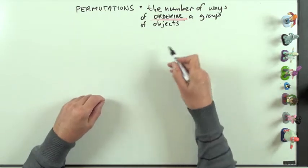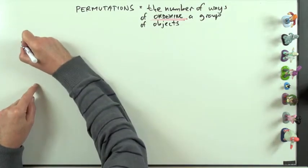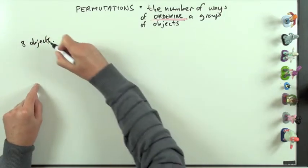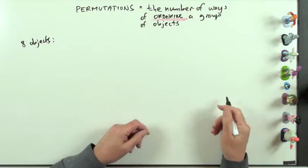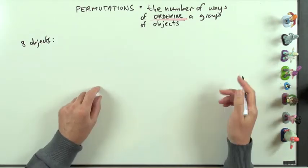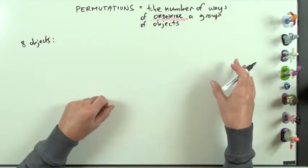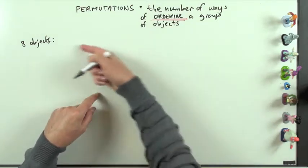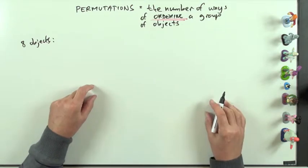How many ways are there of ordering a group of objects? For instance, if you had eight objects — as we have there from the Planet Express team — how many ways are there of arranging them in a line? The same way as in a race: how many ways are there of them arriving at the finishing line for the finishing order?